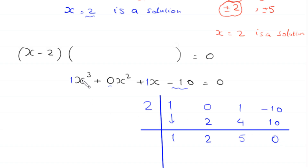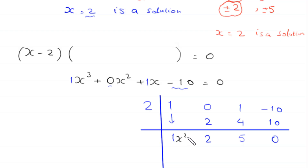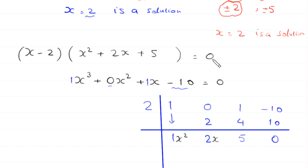Now, because here we have a 3rd degree expression, and 1 power we have already accounted for, this expression here must be a 2nd degree or quadratic expression. So we make a quadratic expression from these 3 numbers: we write 1x squared, plus 2x, plus 5. So here we get the expression x squared plus 2x plus 5 is equal to 0.